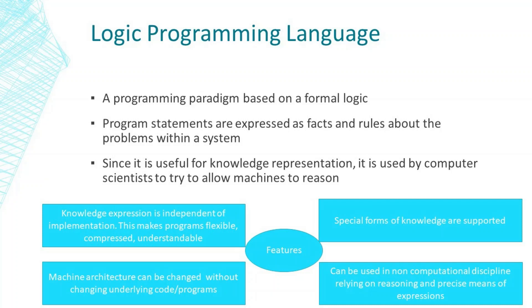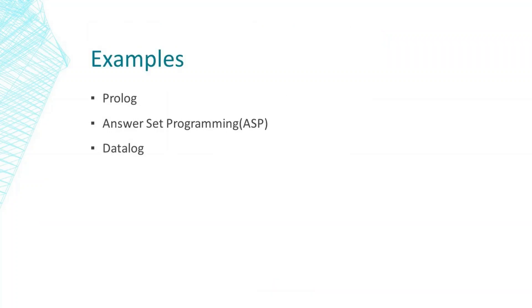Logic programming language is a programming paradigm based on formal logic. Program statements are expressed as facts and rules about problems within a system. Since it is useful for knowledge representation, it is used by computer scientists to allow machines to reason. Features include: knowledge representation is independent of implementation, making programs flexible, compact, and understandable; special forms of knowledge are supported; machine architecture can be changed without changing underlying code; and it can be used in non-computational disciplines relying on reasoning and precise means of expression. Examples are Prolog, Answer Set Programming, and Datalog.